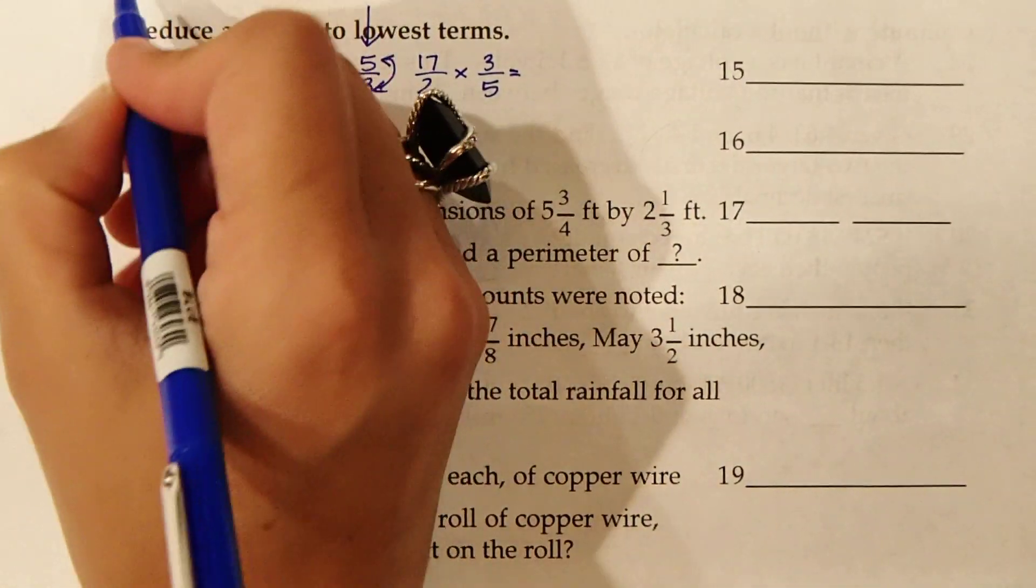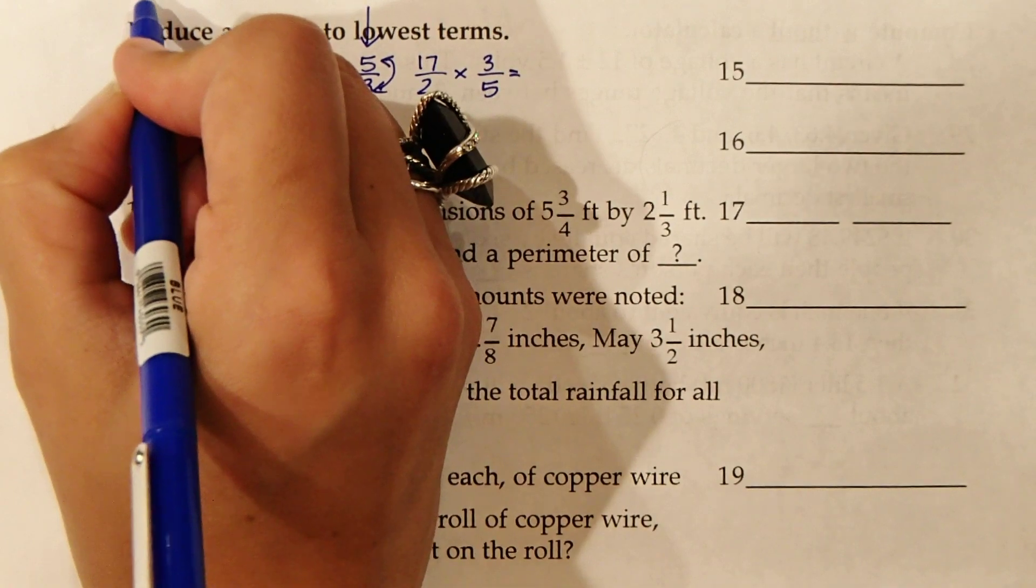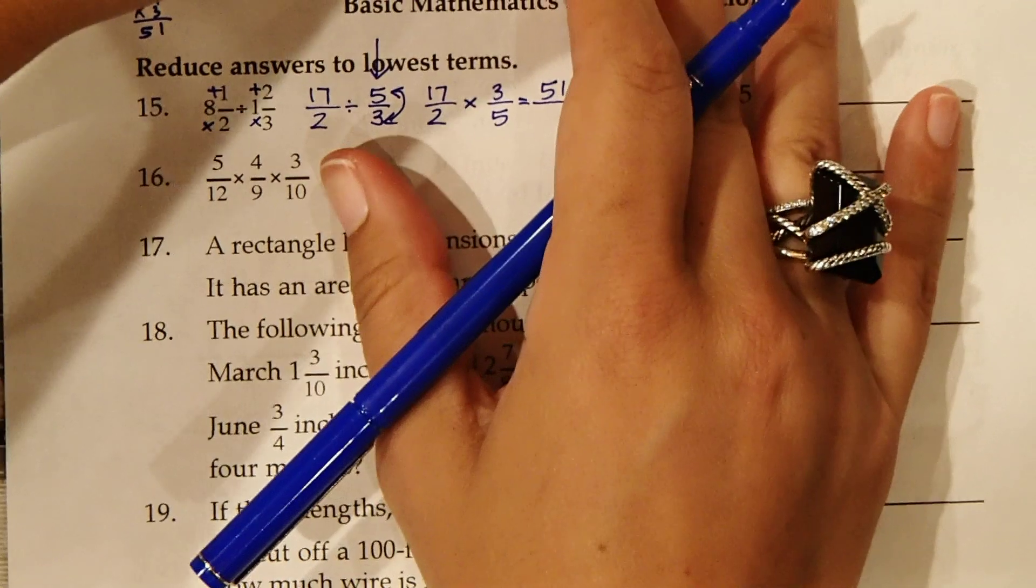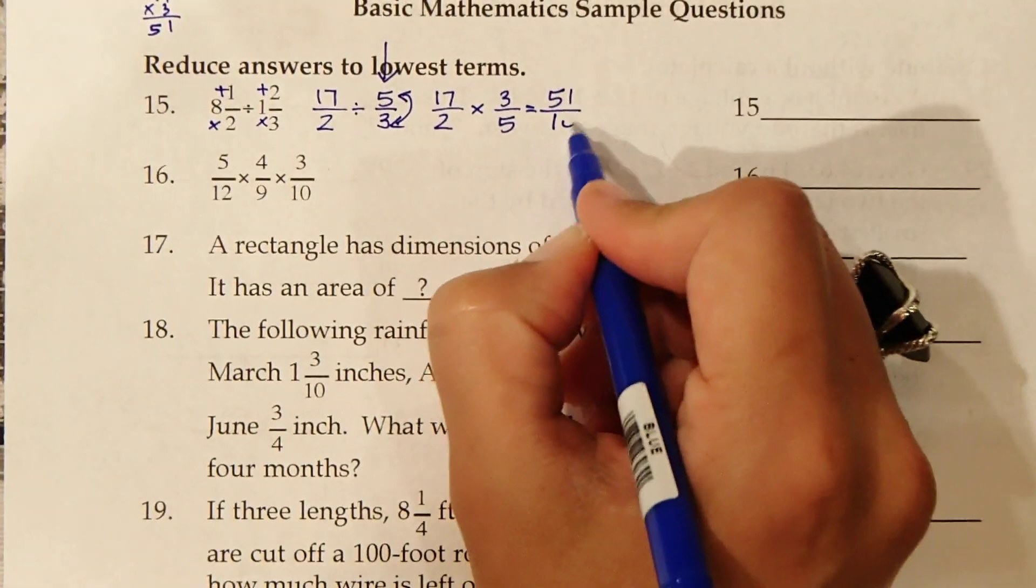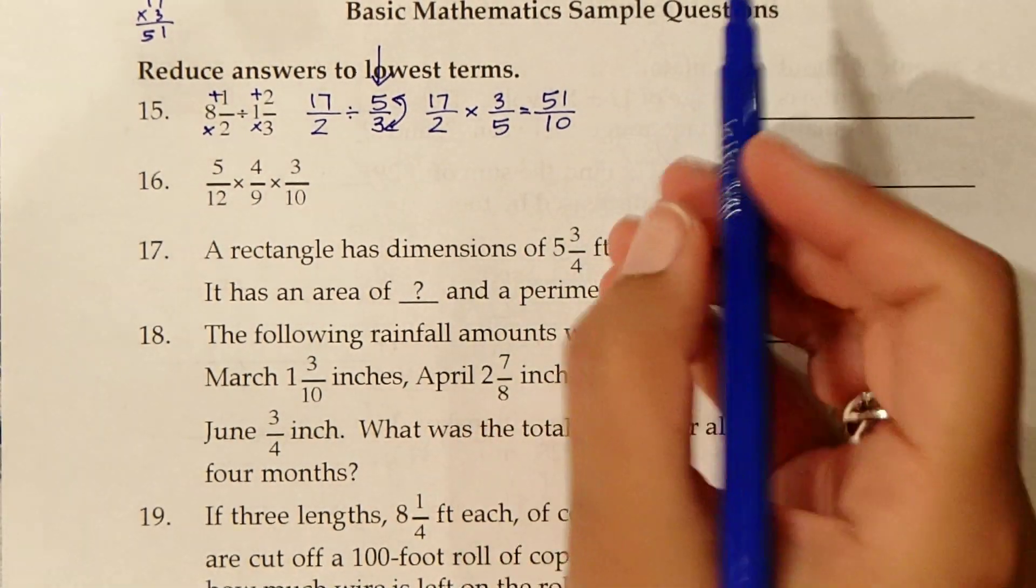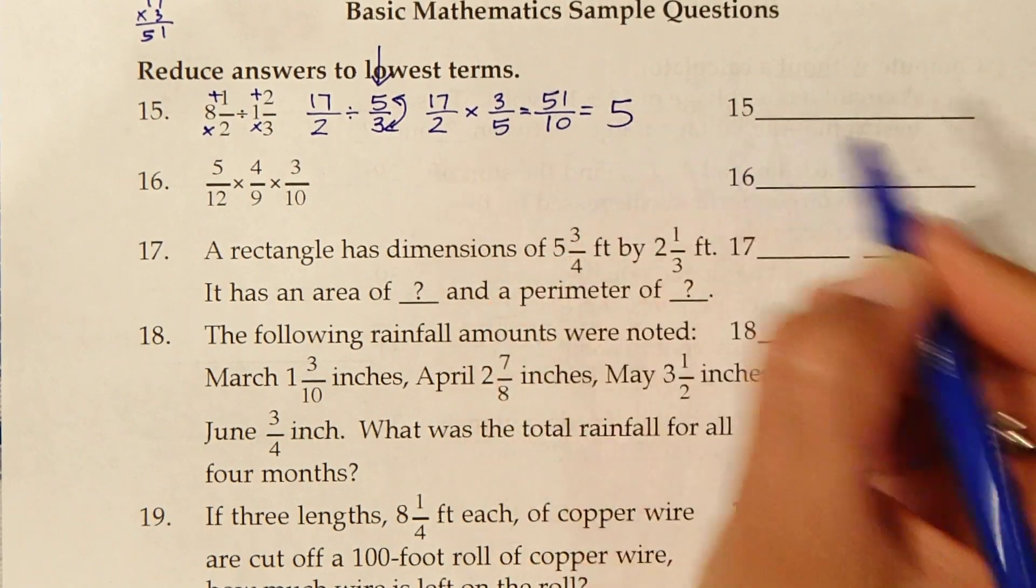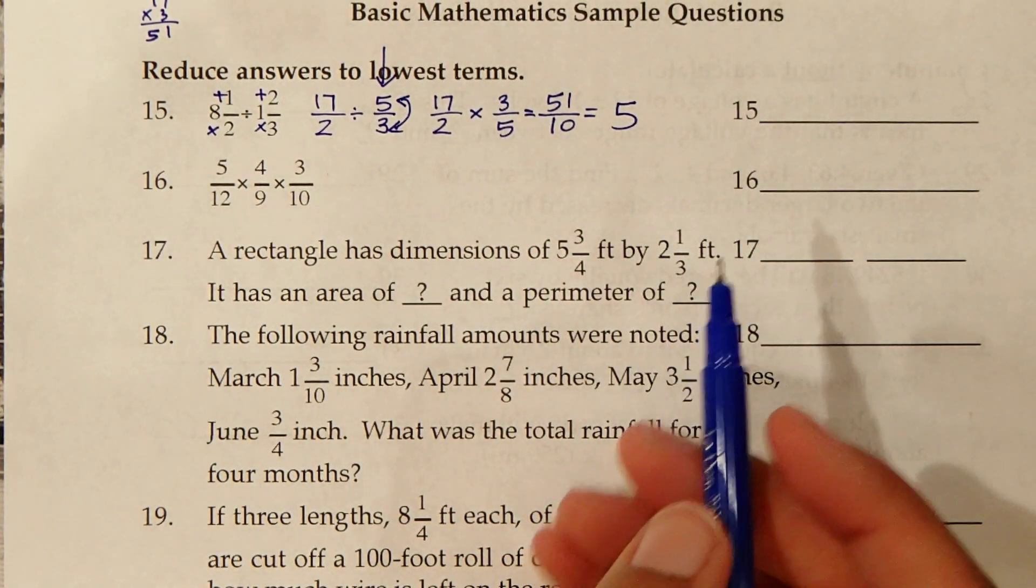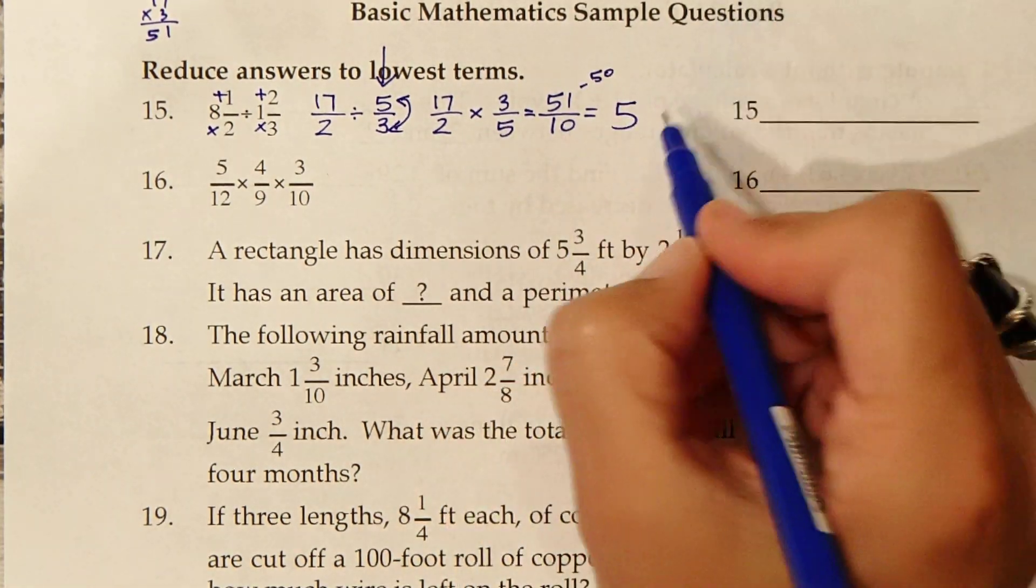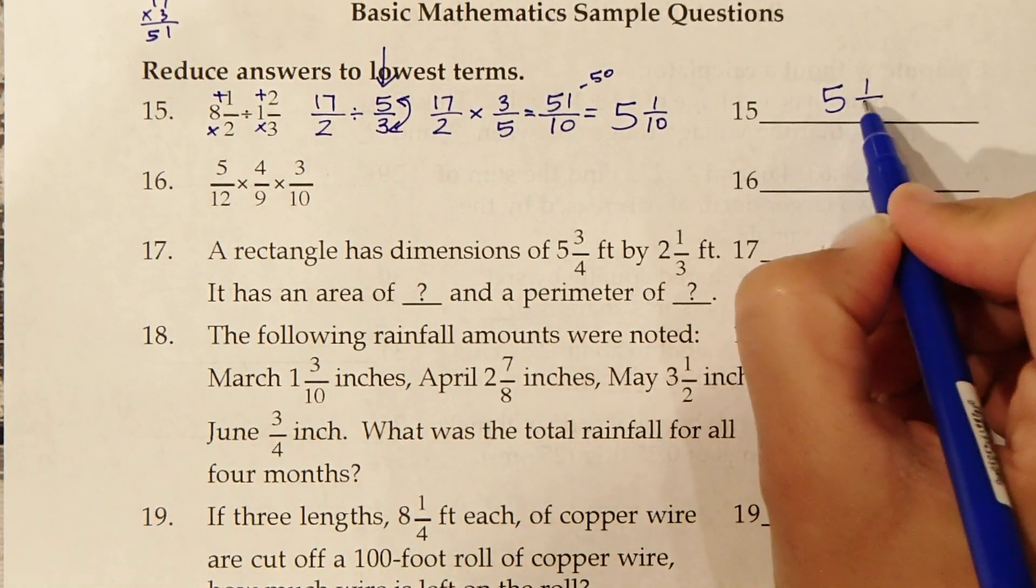We're going to do 17 over 2 times 3 over 5. 17 times 3 is 51 over 2 times 5 is 10. We need to convert this into a mixed number. Five tens fit into 51, that's 50. If we take 50 away from the numerator, we're left with 1 out of 10 left. So our answer is 5 and 1 tenth.